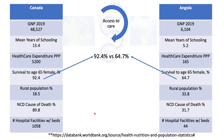Comparing some basic statistics, there are obvious differences in GNP, mean years of schooling — 13 years in Canada versus grade 5 — and massive differences in healthcare expenditures. A quite telling statistic: the percent of females surviving to age 65 is 92% in Canada versus 64.7% in Angola.